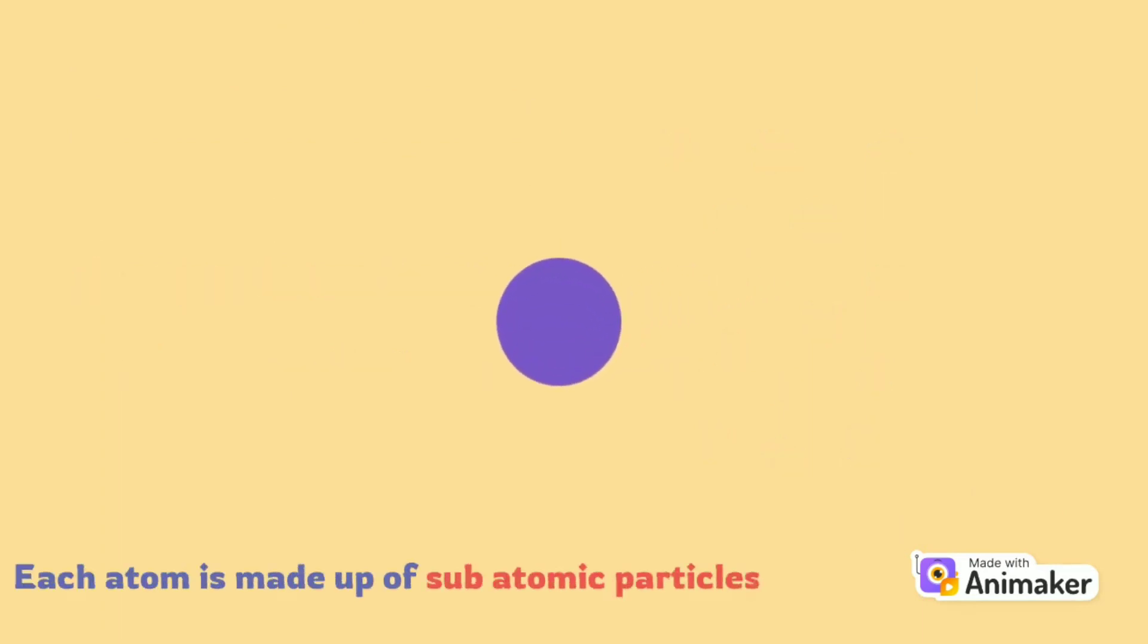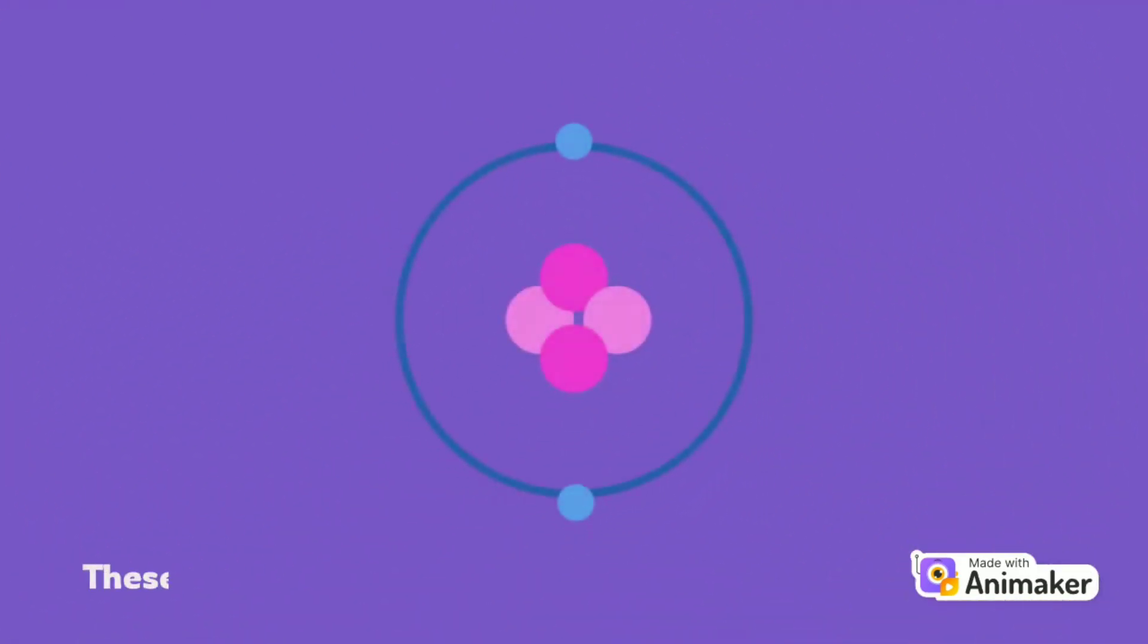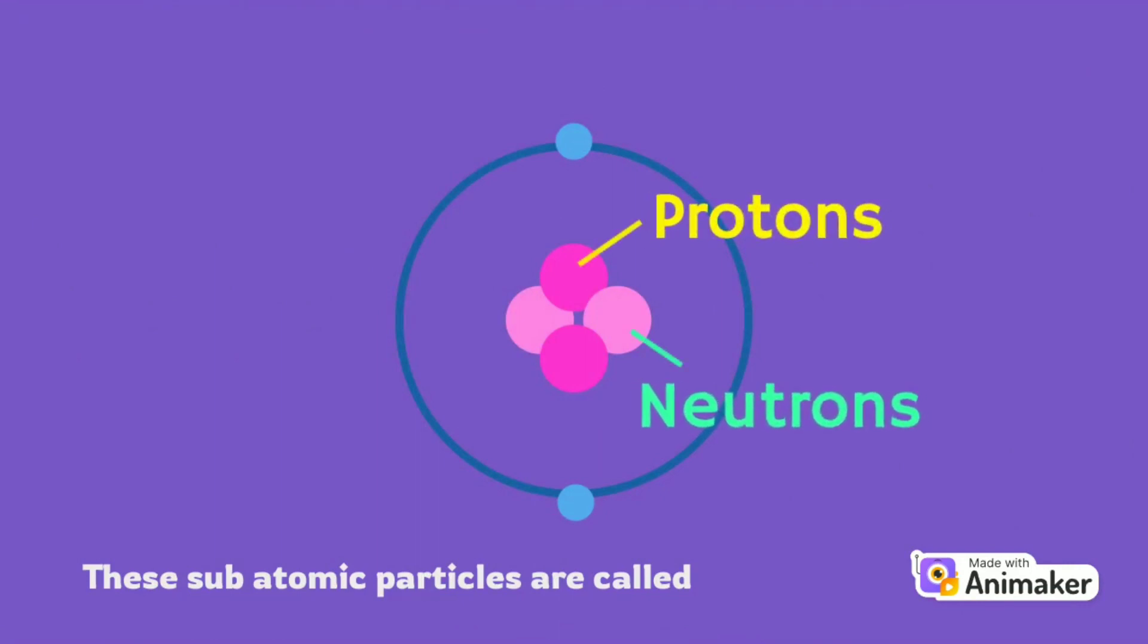Each atom is made up of subatomic particles. These subatomic particles are called protons, neutrons, and electrons.